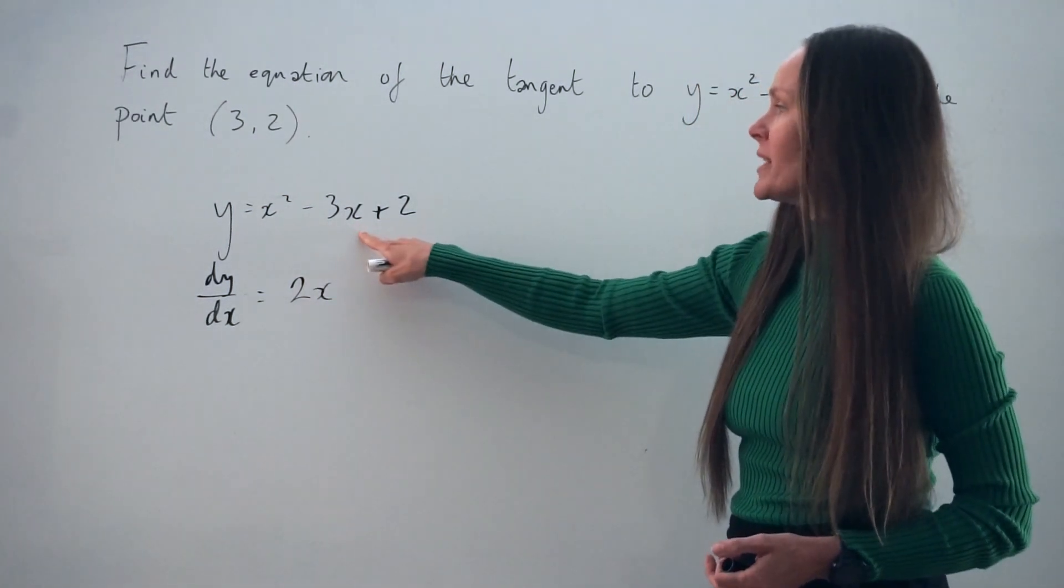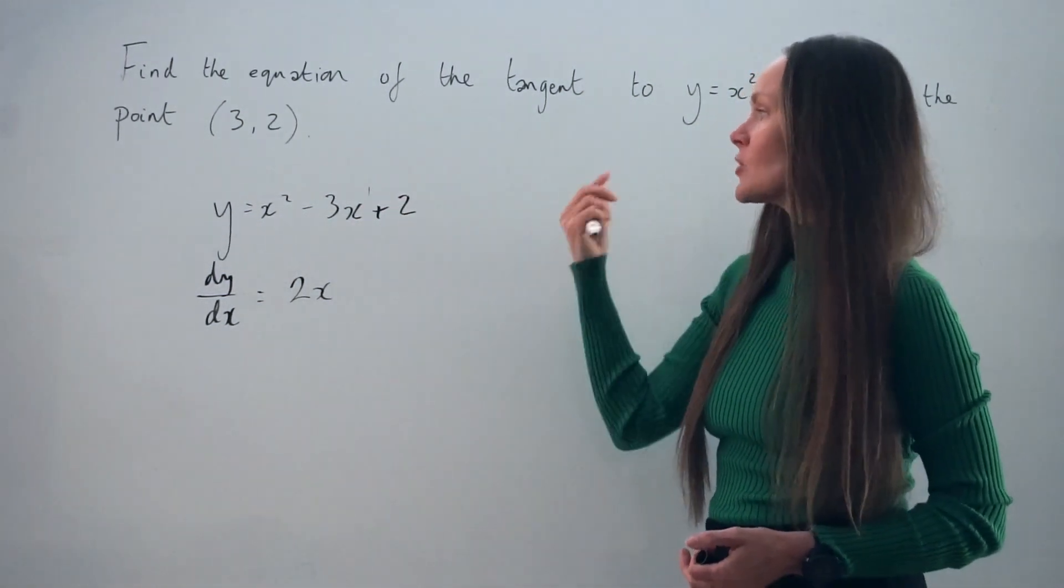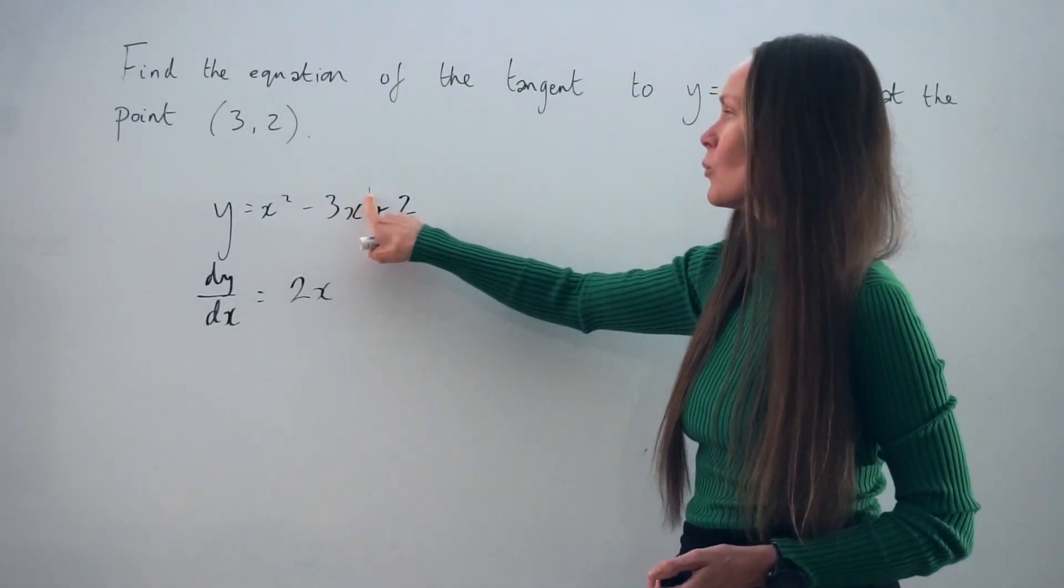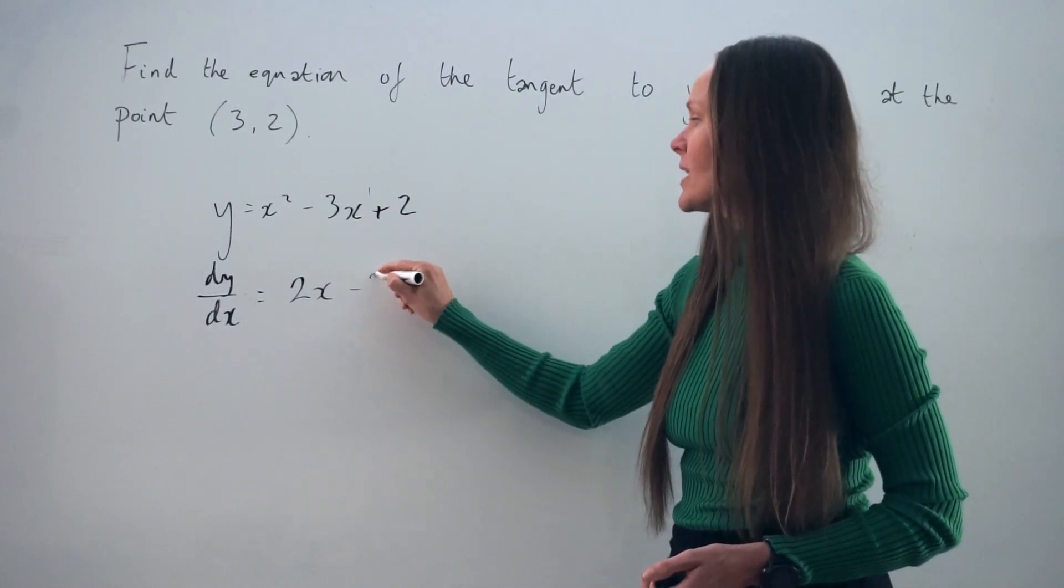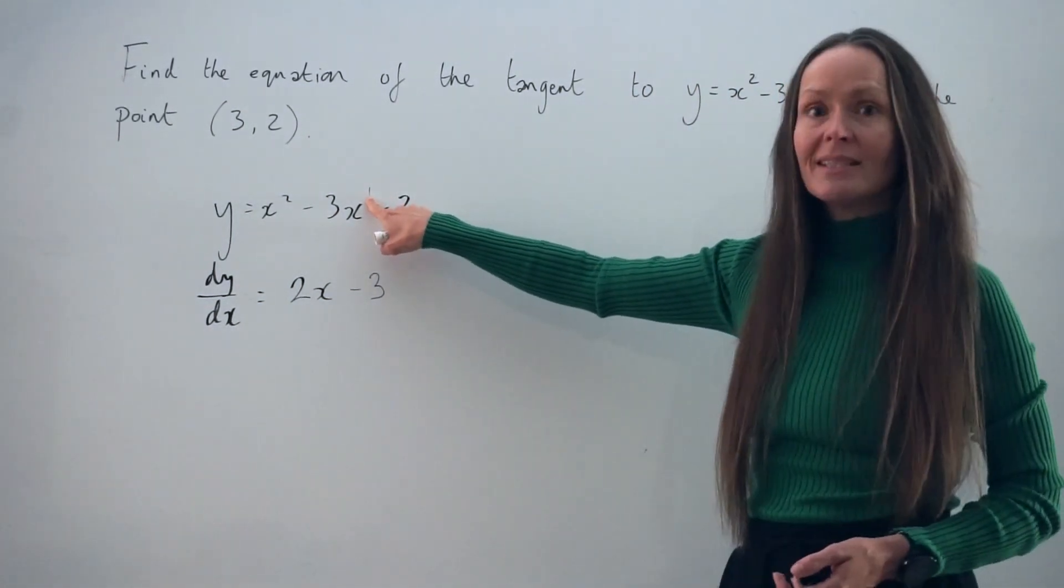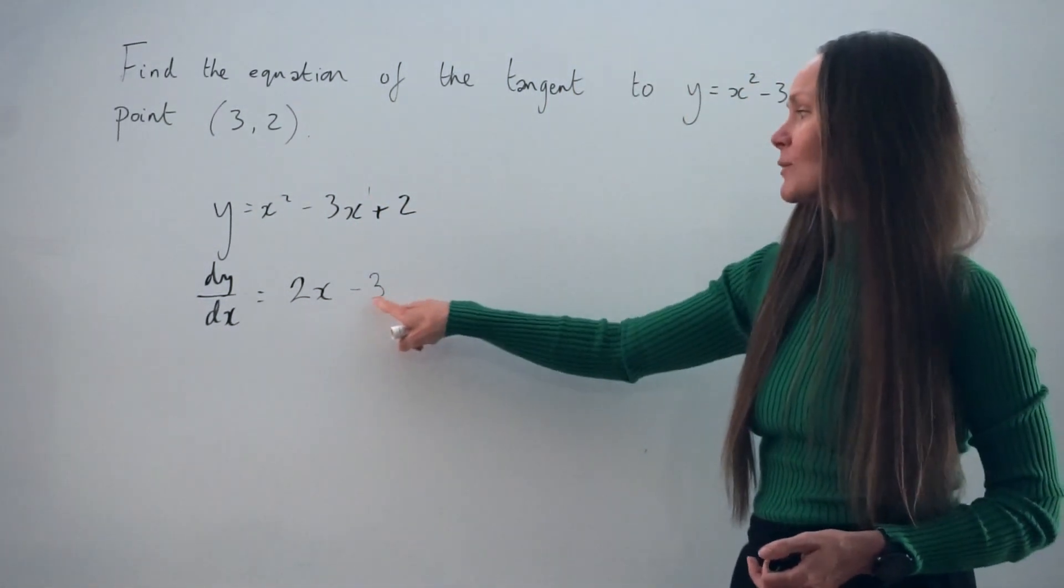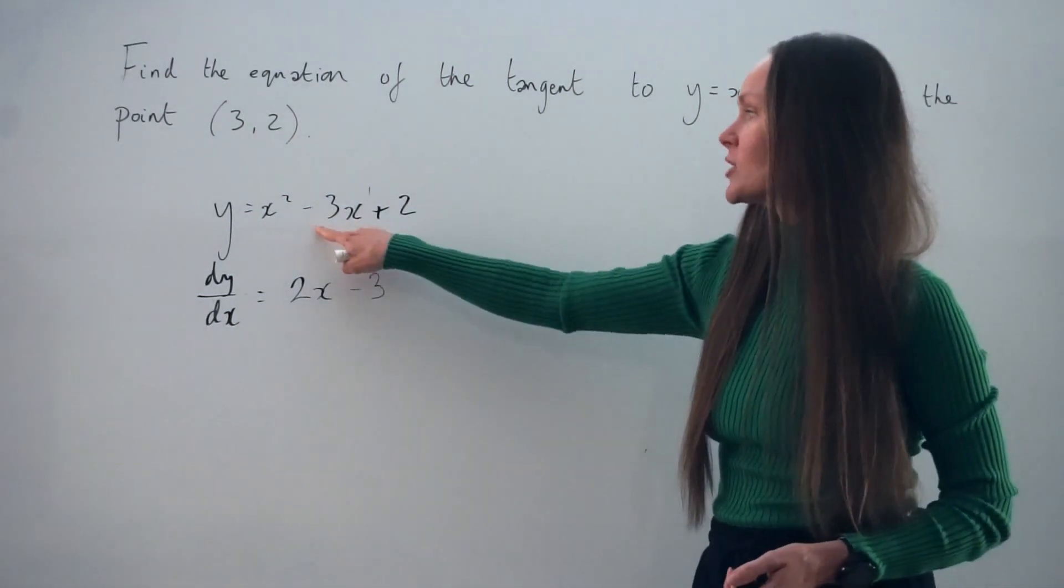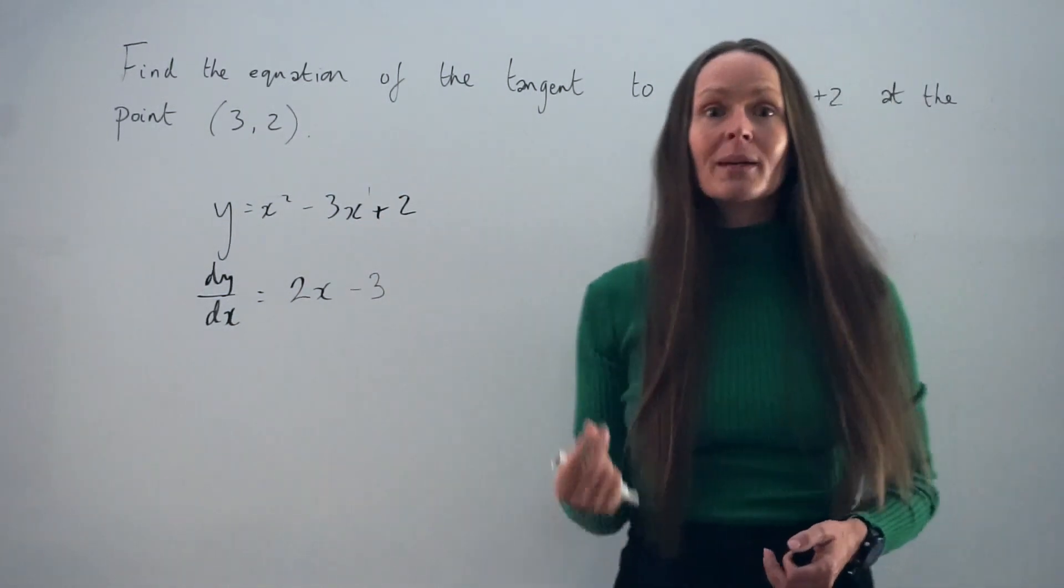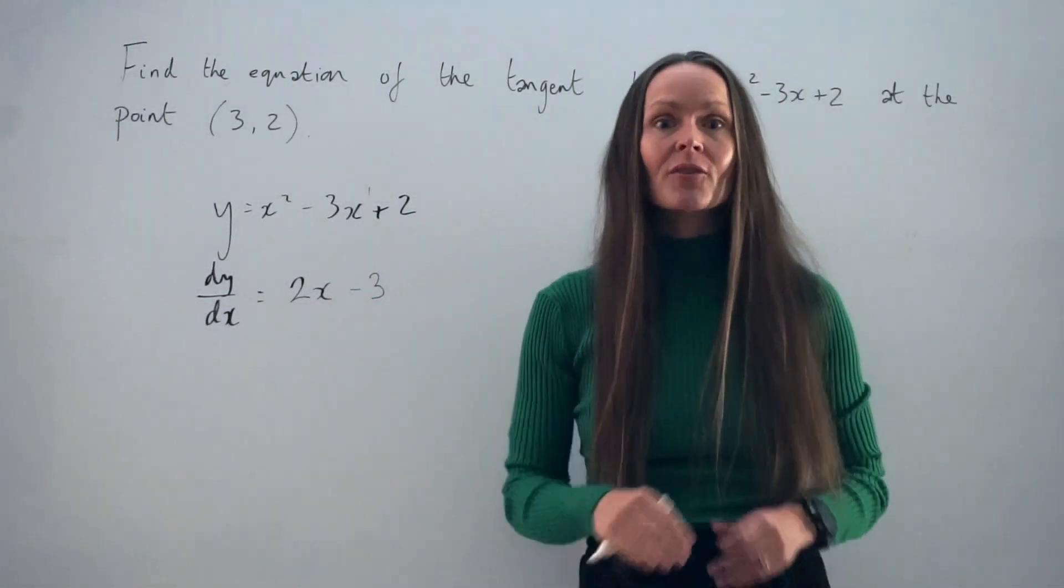Then if I differentiate this term here, it's like negative 3x to the power of 1. We just don't write this number 1 in here. So if I apply the same method, I take this power 1, I multiply it by this term here. So 1 multiplied by negative 3 is negative 3. And again, the power decreases by 1. So if this power decreases by 1, we're left with 0. And x to the power of 0 is equal to the number 1. And negative 3 times 1 is just negative 3. So when we differentiate this term, we're left with negative 3. And whenever you differentiate a constant like this, you're left with 0. So this derivative, this is an expression for the gradient of the curve at any point.